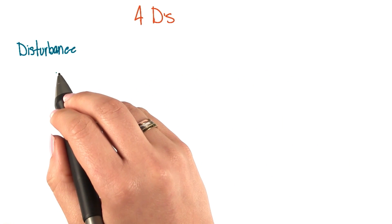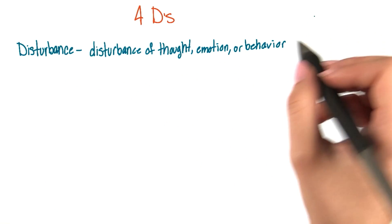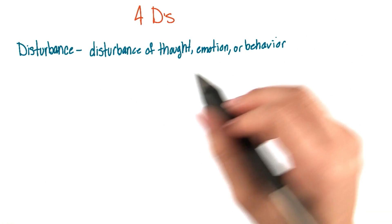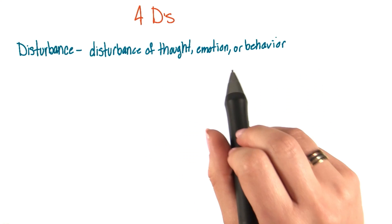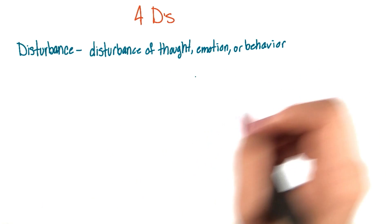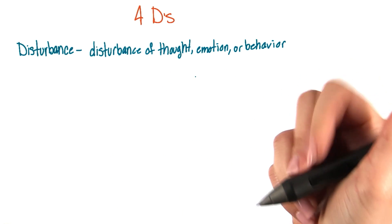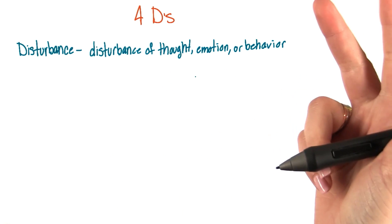First, we have disturbance. And here we mean disturbance of thought, emotion, or behavior. That is, things are not going well in how a person thinks, feels, or behaves.